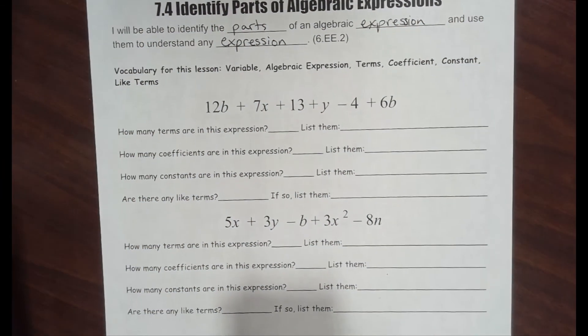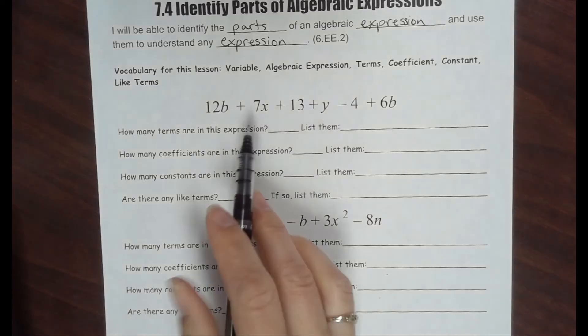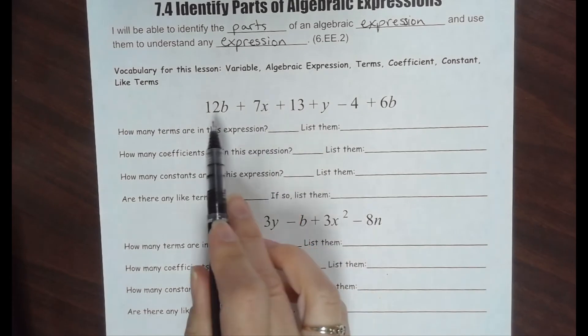We've got some more vocabulary words. You will need the chapter 7 vocabulary sheets. Vocabulary for this lesson: variable, we've already learned about that, that's when we use a letter to represent an unknown value. An algebraic expression is turning everything into math language using variables, numbers, and operations.